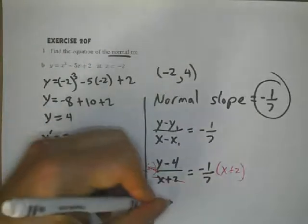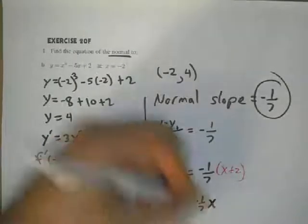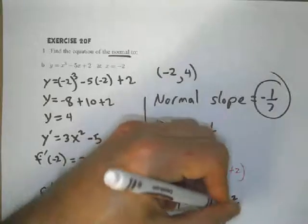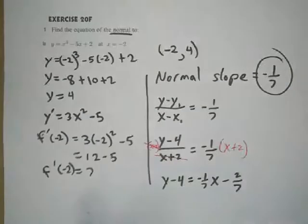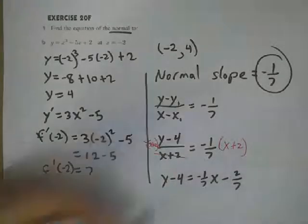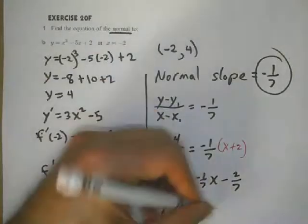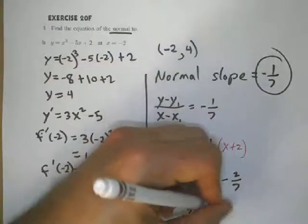Now I've got y minus 4 equals negative 1 over 7 times x minus 2 over 7. The final step is to add 4 to both sides. So we get y equals negative 1 over 7 times x minus 2 over 7 plus 4.